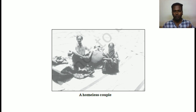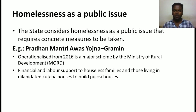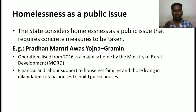In the book, a homeless couple is given as an example of sociological imagination. Homelessness becomes a public issue when not just one individual but many individuals in a given state face it, prompting government action. For example, Pradhan Mantri Awas Yojana Gramin, operationalized from 2016 under the Ministry of Rural Development, provides financial and labor support to houseless families and those living in dilapidated houses to build pucca houses.